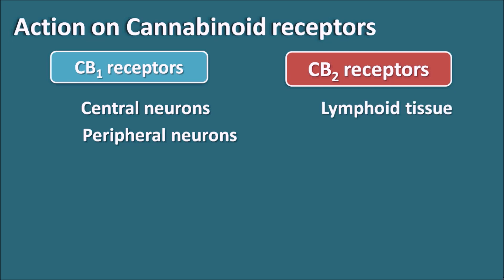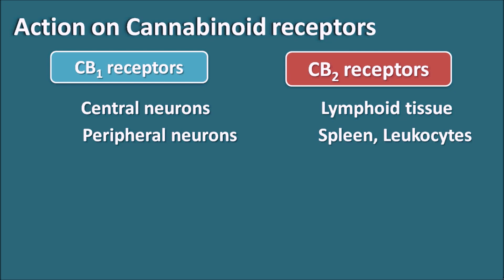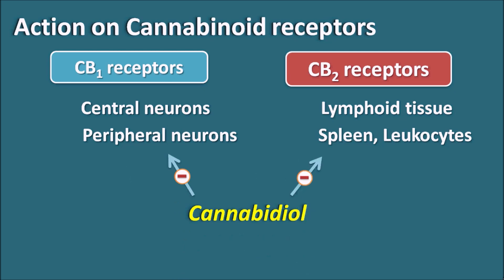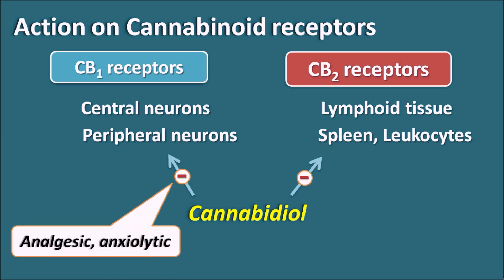CB2 receptors are mainly present on immune cells like lymphoid tissue, spleen, and leukocytes, so CB2 receptors are mainly confined to the peripheral immune system. A few CB2 receptors are also found in some neurons but their main role is on peripheral immune cells. Cannabidiol can block both CB1 and CB2 receptors. By blocking CB1 receptors it mainly shows analgesic as well as anxiolytic activity.